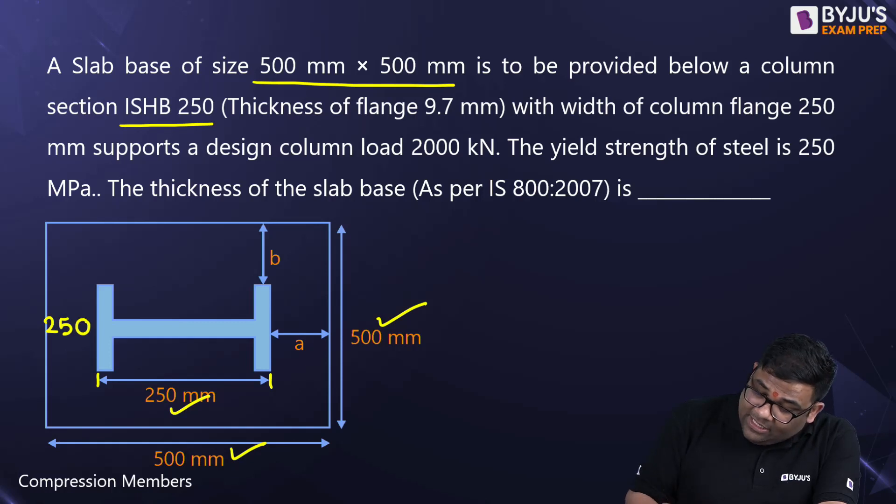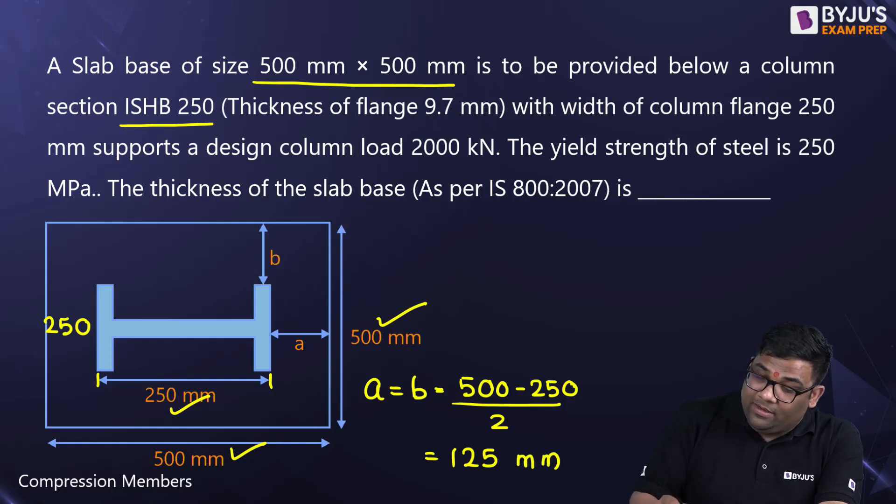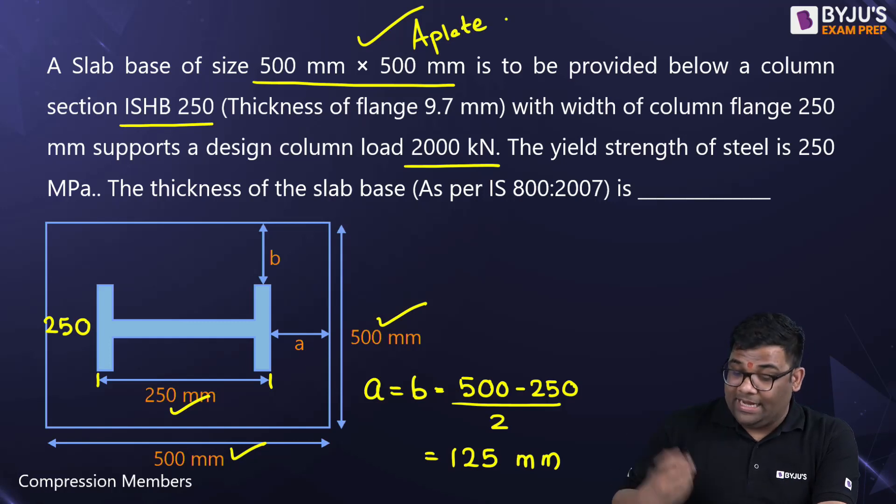So I can say here your a and b will be equal to how much? It will be 500 minus 250 divided by 2, that is 125 mm. Now the load is given, right? The area of the plate we can find out, so we can find out w also. And a and b we have already got.